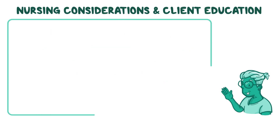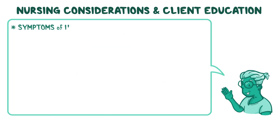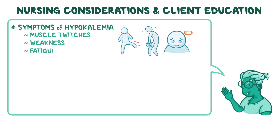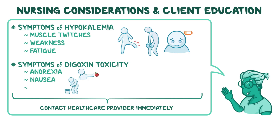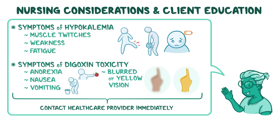Teach your client how to recognize symptoms of hypokalemia, such as muscle twitches, weakness, or fatigue, and stress the importance of contacting their healthcare provider immediately if these occur. Finally, teach them to recognize symptoms of digoxin toxicity, such as anorexia, nausea, vomiting, and visual disturbances like blurred or yellow vision. If they experience any of these symptoms, advise them to contact their healthcare provider immediately.